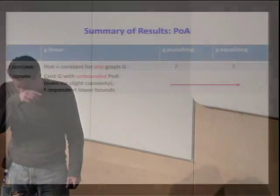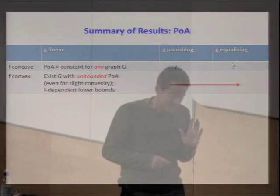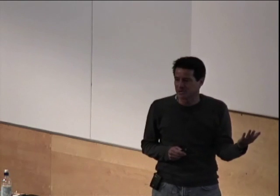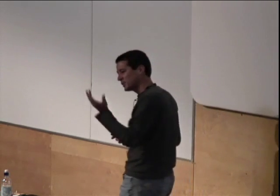Let me summarize the main results. One justification of the decomposition the model makes between F and G is that what happens with the price of anarchy is largely characterized by properties of F and largely invariant to properties of G. The price of budgets is a little more complicated, but you can still fill in very broad classes of behavior based on properties of F and G.